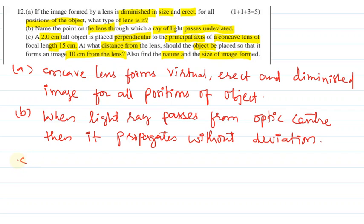Question number C. Here the height of the object is 2 cm. Focal length is minus 15 cm. Why minus? Because it is a concave lens. Image distance is 10 cm, but on the same side, so minus 10 cm because it's a concave lens. We have to find the object distance.